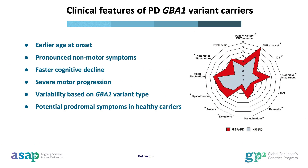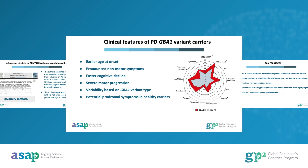PD cases carrying GBA1 variants exhibit distinct clinical features, including earlier onset, more pronounced non-motor symptoms, and faster cognitive decline. Recent studies have investigated how different GBA1 variants affect disease progression and have reported more severe forms among homozygous cases, characterized by increased cognitive decline, depression, and hallucinations. Additionally, GBA1 has been frequently associated with cognitive impairment, and even healthy carriers of GBA1 variants may display subclinical symptoms, which could indicate potential prodromal features.